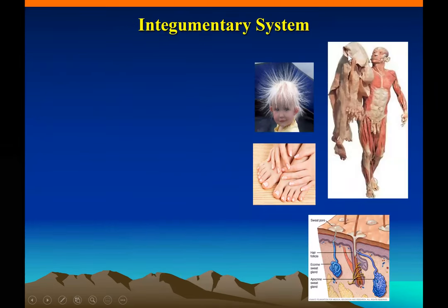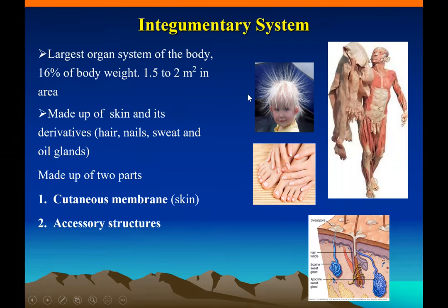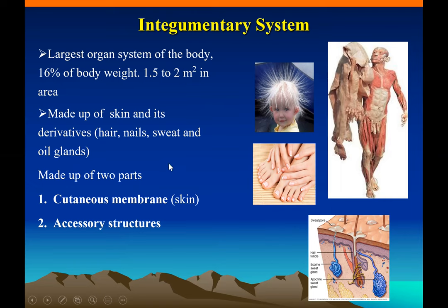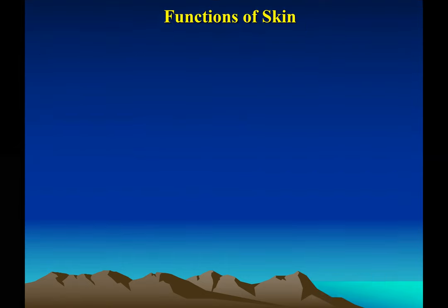Our skin is the largest organ in the human body. It can be up to 16 percent of the human body mass. The accessory structures found in the skin are hair, nails, and glands. If you stretch out the skin it can be up to 1.2 square meters. The skin has two parts: the cutaneous membrane, which is the skin itself, and accessory structures which are hair, nails, and glands.